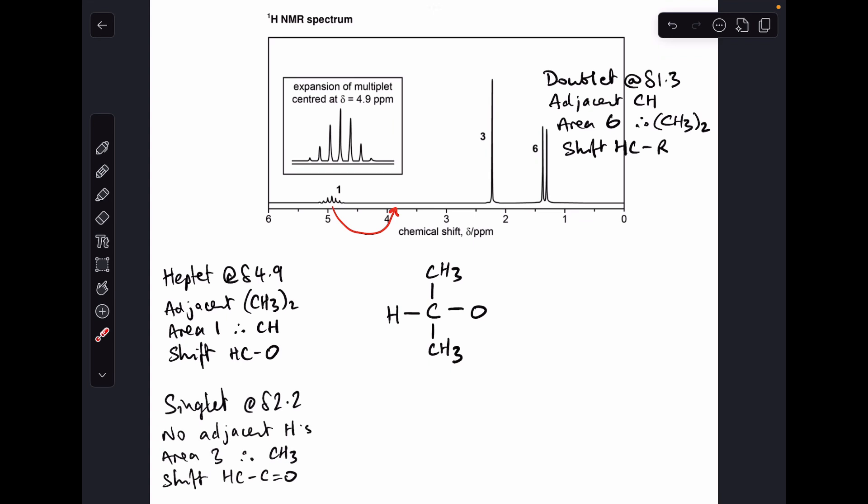We just need to finish with this signal here. This is a singlet and that means there's no adjacent hydrogens to the protons causing the signal. The area of three means it's a CH3 group that's caused the signal and the shift of 2.2 is indicative of an H to C to C double bond O.